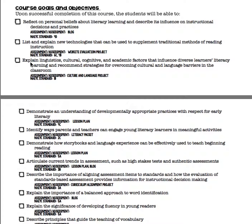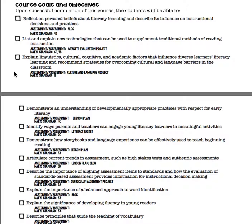Our course goals are quite extensive. Education 270 has a very big curriculum. As you work your way down the list, they follow sequentially as we learn this semester, and there's a correlating assignment and NACI standard for everything you're going to learn. I'm a person that likes lists, so I like to check them off as I learn them, and you can do the same.